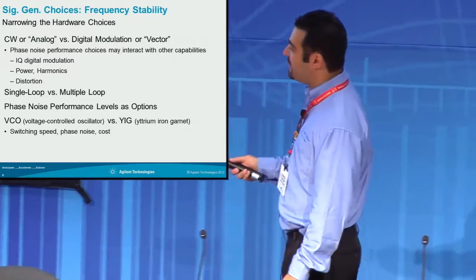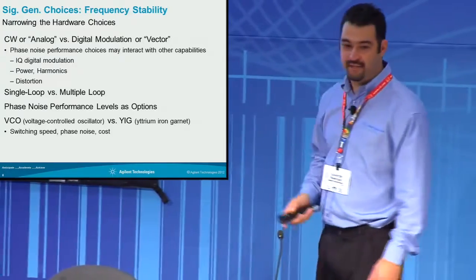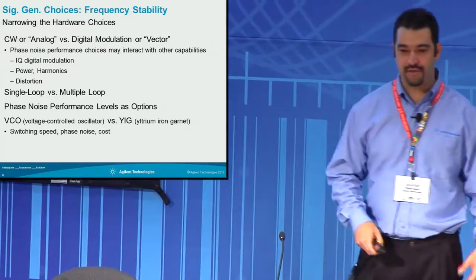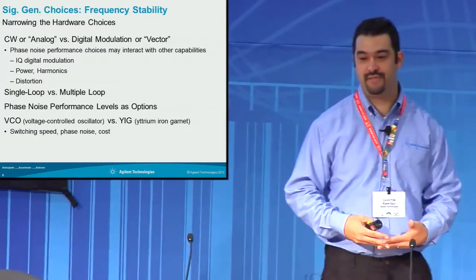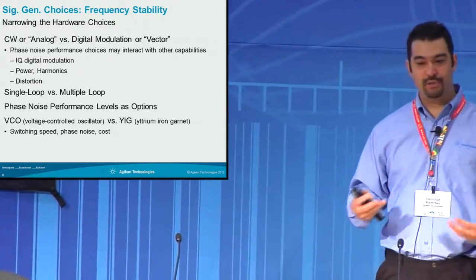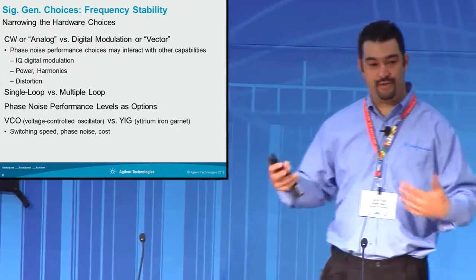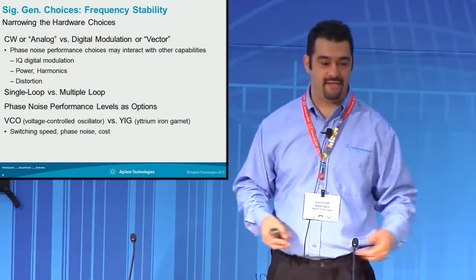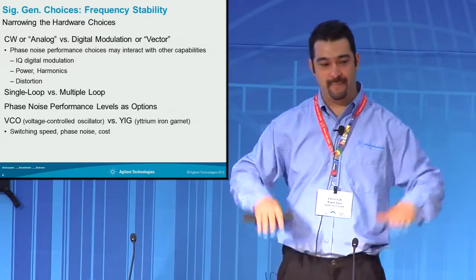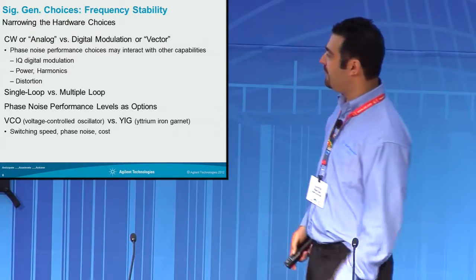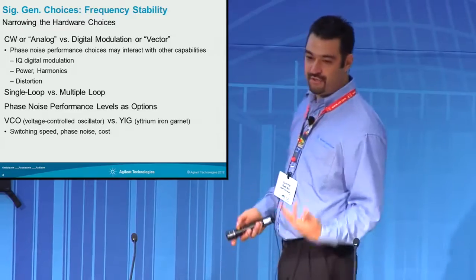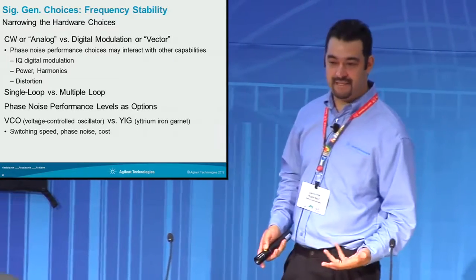Not only that, there are different synthesizer architectures. There are single loop synthesizers versus triple loop or double loop synthesizers. That will affect the pedestal region of phase noise, and it's also a trade-off in cost, typically.